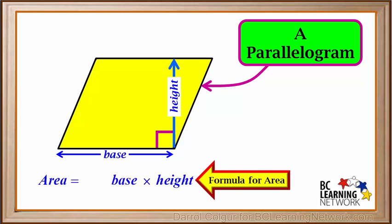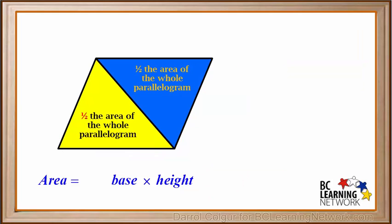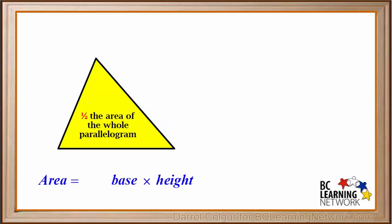Remember, the formula for the area of a parallelogram is the base times the height. You can see that the area of the yellow triangle is exactly one half of the area of the whole parallelogram. So if we remove the blue triangle, we have only one half of the parallelogram left.